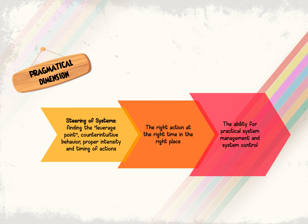The fourth dimension is the Pragmatical Dimension. We look into the steering of the system to find the leverage point, consider counterintuitive behavior, and examine the proper intensity and timing of action. We look for the right action at the right time in the right place — this is what people want to find — along with the ability for practical system management and control. This is basically about how we practice systems thinking in real life.